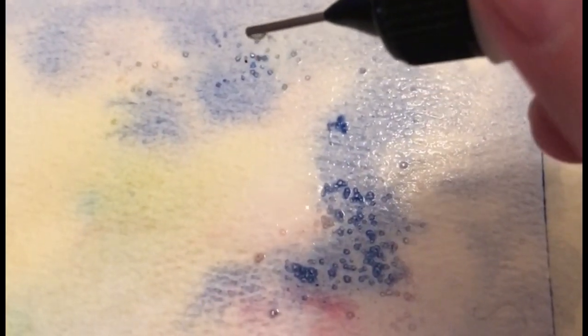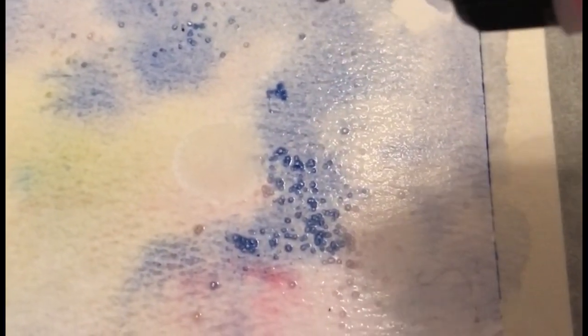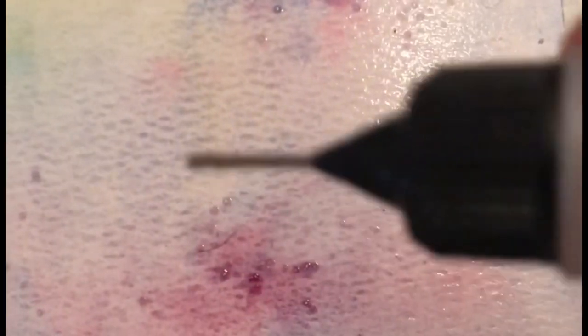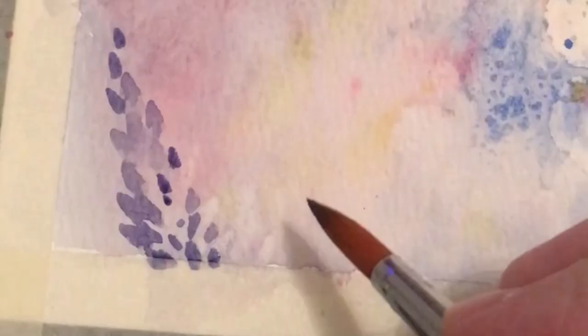This is the alcohol, rubbing alcohol. I drop alcohol in certain places because it does this beautiful orbing, or bubbles. Like in one of my paintings I had these bubbles. I just love the effect. Even if you don't use it as bubbles, it gives a really cool effect.